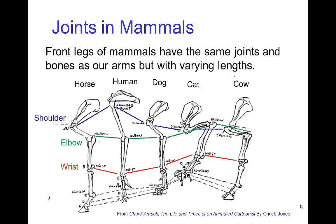The joints in mammals tend to be rather similar. Here we see the bone structure for horse, human, dog, cat, and cow — this is for the front leg, or the arm for the human. We have a shoulder joint, elbow joint, and a similar wrist joint.